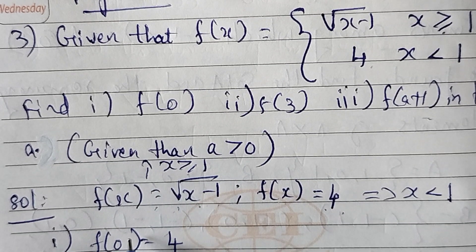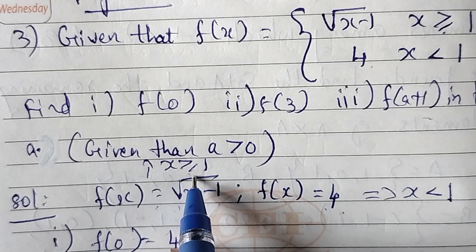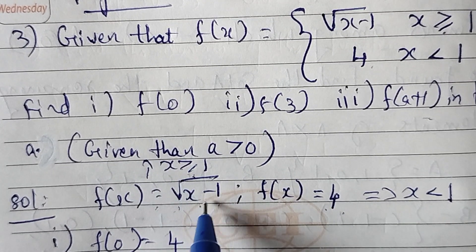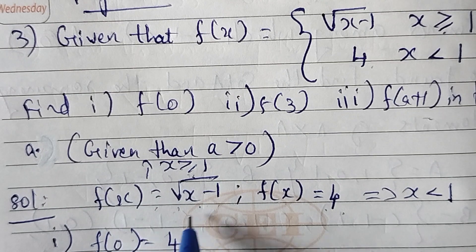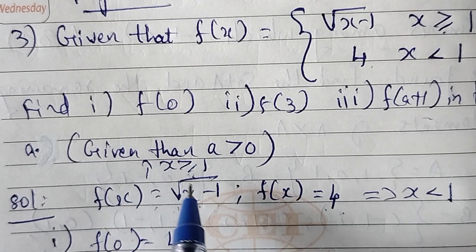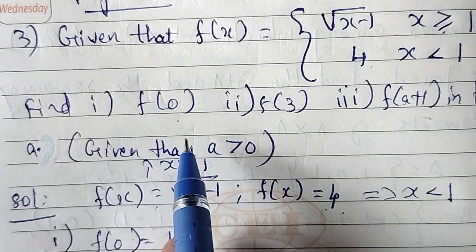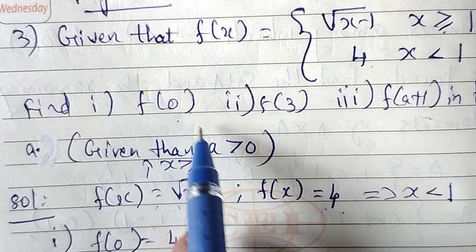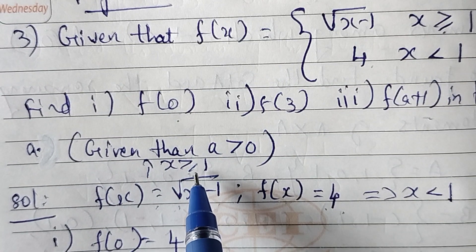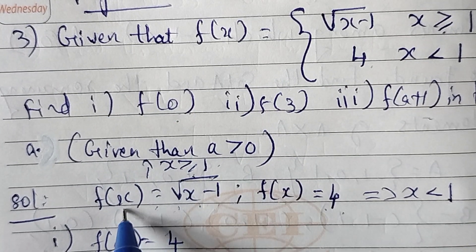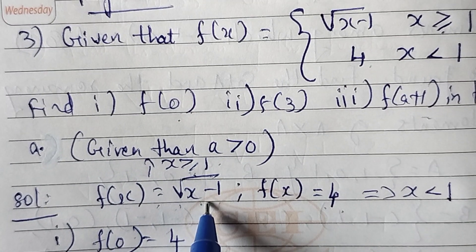For f of 0: since 0 is less than 1, we use the second condition. So f of 0 equals 4.